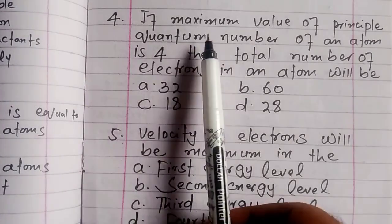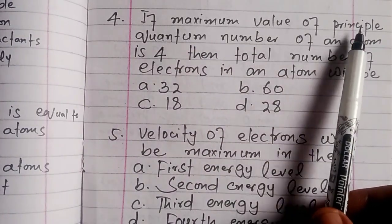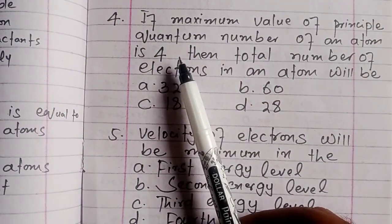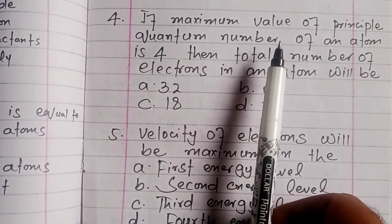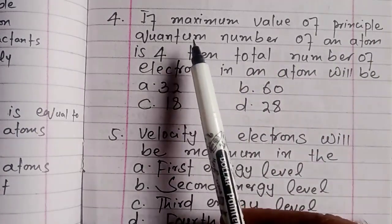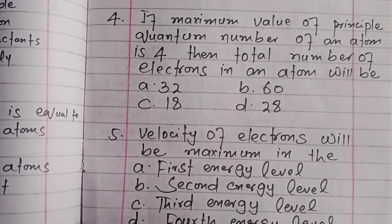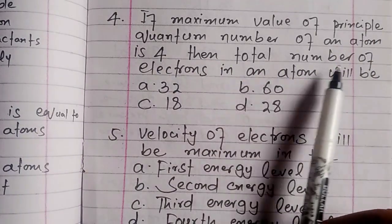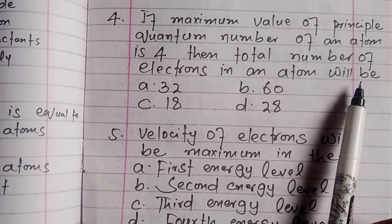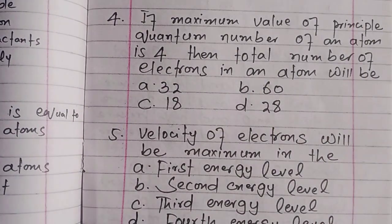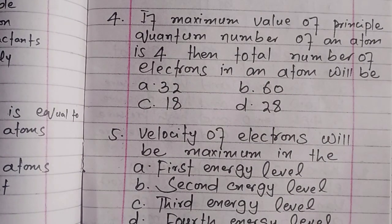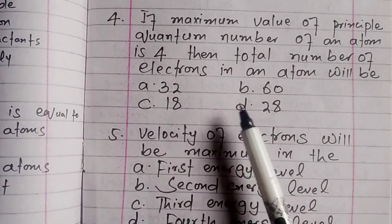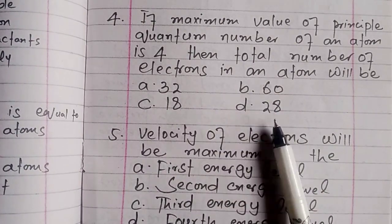Question 4: If the maximum value of the principal quantum number of an atom is 4, then the total number of electrons in that atom will be — is it 32, 60, 18, or 8? Think and write your answer.